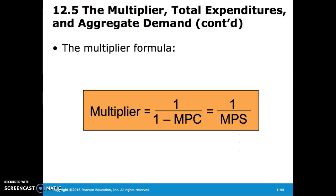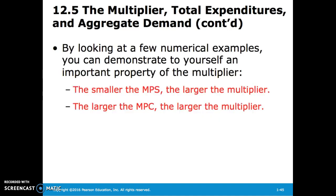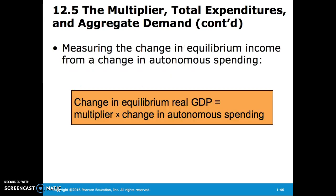We can find the multiplier by dividing 1 by (1 minus the marginal propensity to consume), or by dividing 1 by the marginal propensity to save. Clearly, the smaller the marginal propensity to save, the larger the multiplier, and conversely, the larger the MPC, the larger the multiplier. So the change in equilibrium real GDP equals the multiplier times the change in autonomous spending.